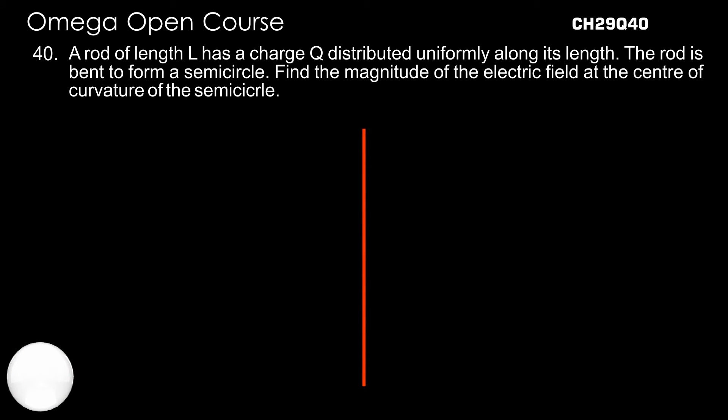A rod of length L has a total charge Q distributed uniformly along its length. It is bent in the shape of a semicircle. Find the magnitude of the electric field at the center of curvature of the semicircle.